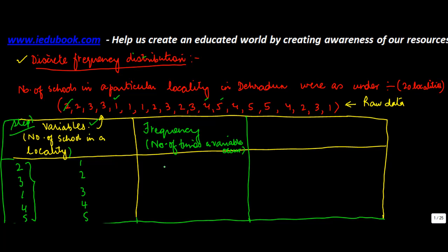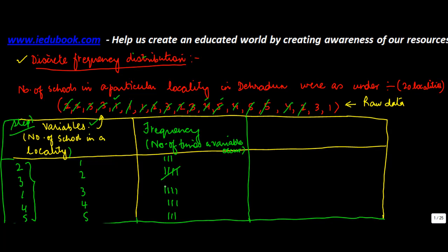So you start from the first item and start putting them in the form of tally marks against the respective values. We have got 2 here, so against 2 you put in 1. Then against 1 you put a bar. Against 3, put 1 bar. You go through each value — 2, 3, 4, 5, 4, 5, 4, 4, 2 — marking each one. Once you've got 4 marks, for the 5th one you just put in a cross. So you write the frequency in the form of tally bars.